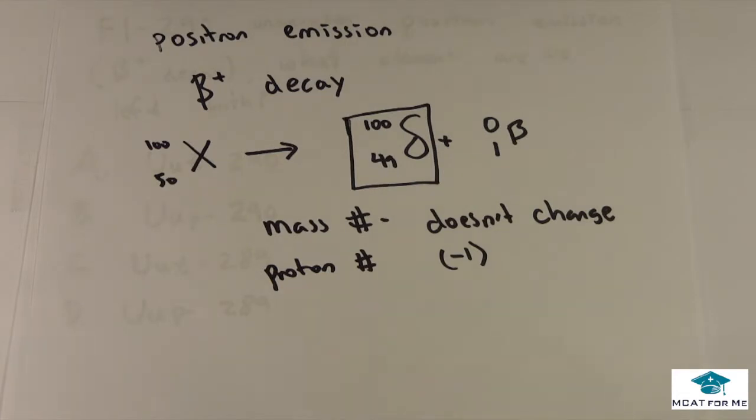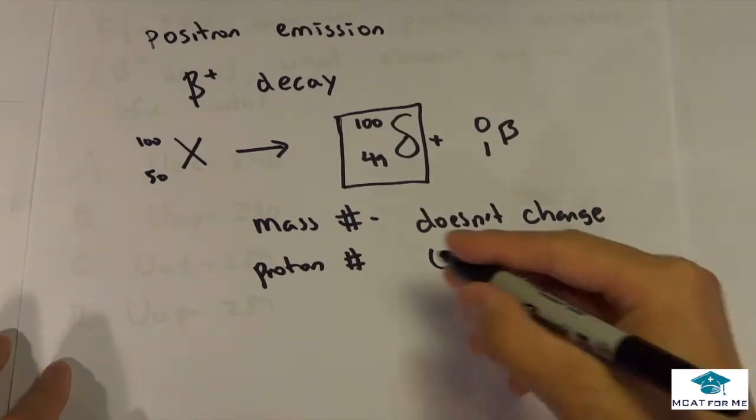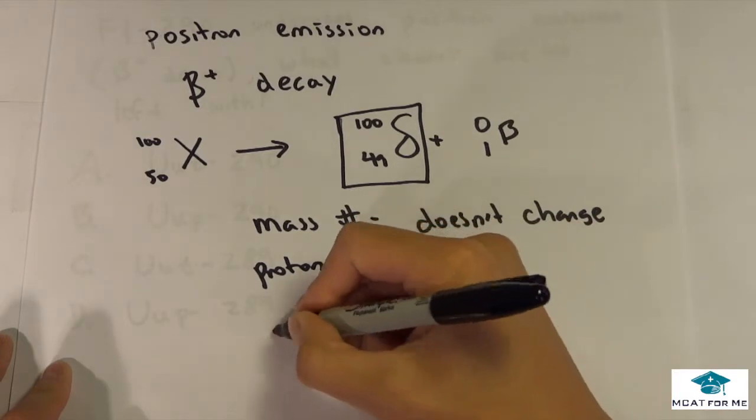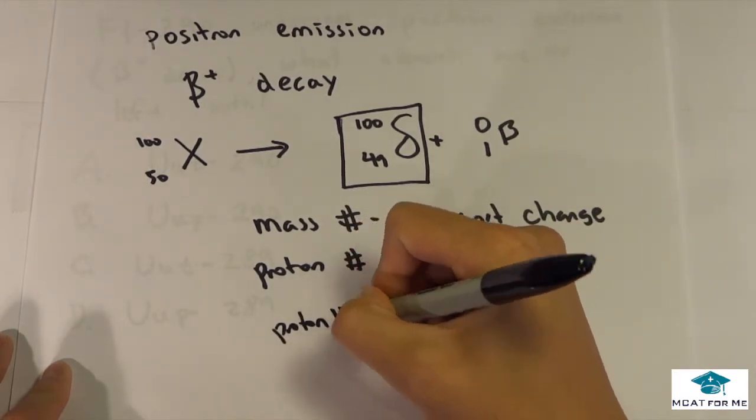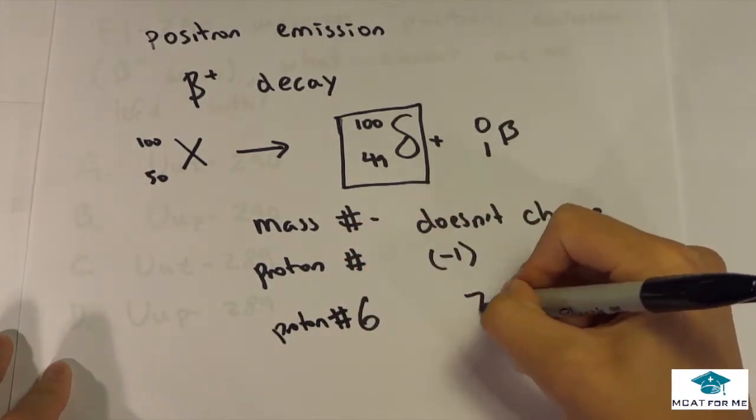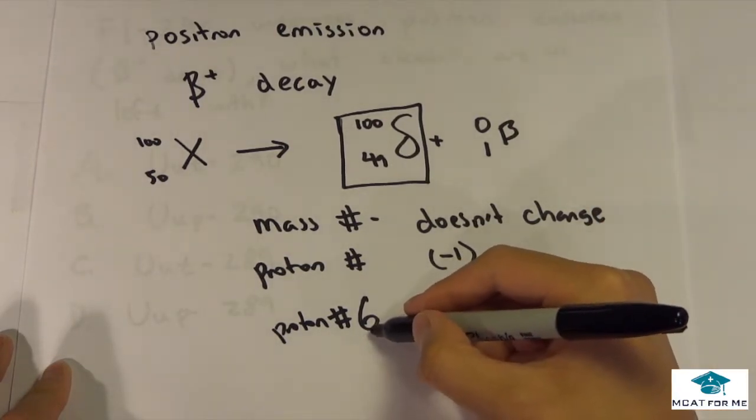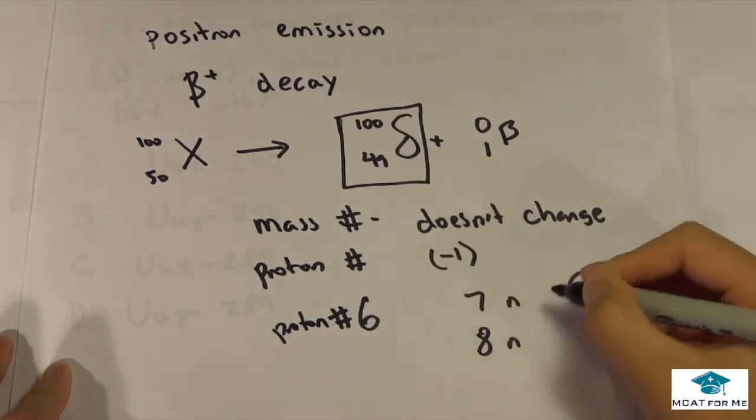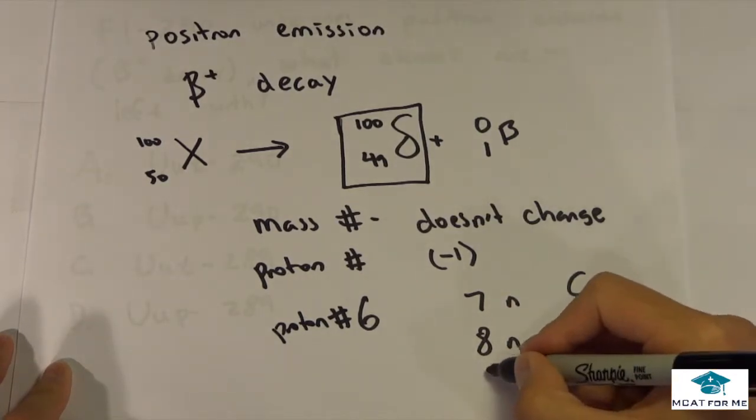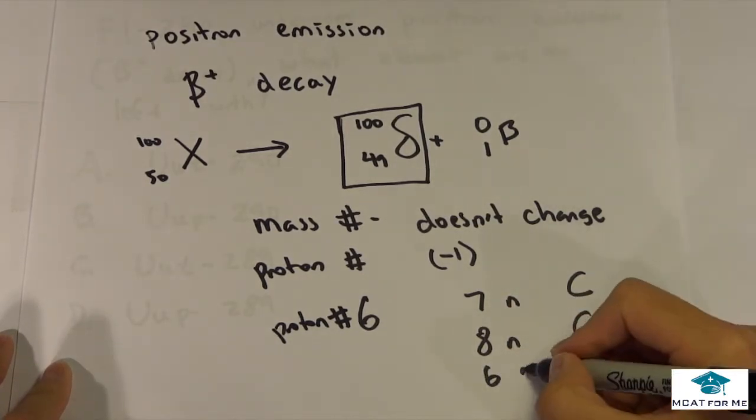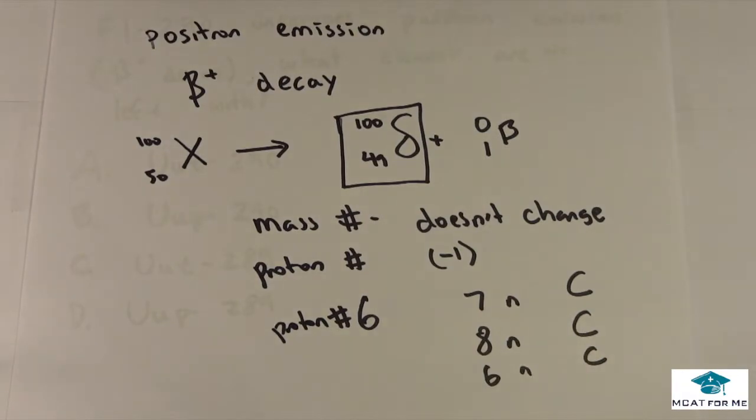You could have as many neutrons, as many electrons as you want, or as few, but the proton number is what determines what that actual element is. So for example, if we had a proton number of 6 and then say we had 7 neutrons, it would be carbon. If we had a proton number of 6 but it had 8 neutrons, it would still be carbon. And if it had 6 neutrons, it would still be carbon. So everything is solely dependent on this proton number.